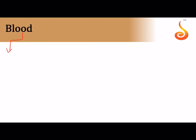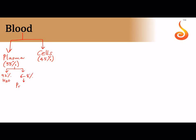Blood has two major components: plasma and formed elements (cells). Plasma makes up about 55% of the blood and cells make up about 45%. In plasma, 92% is water and the remaining 6 to 8% is proteins. It is important to know that 6 to 8% of plasma is proteins.